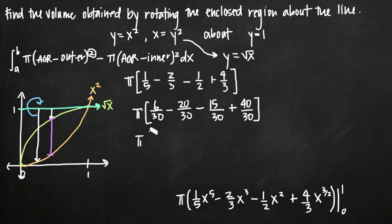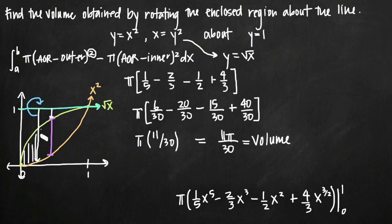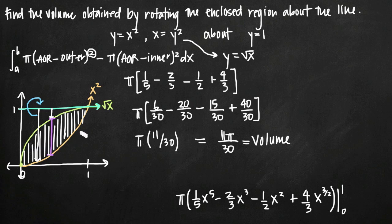Taking 6 minus 20 minus 15 plus 40 gives 11, so we get 11 over 30. Multiplied by pi, our final answer is 11π over 30. This is the volume obtained by rotating the region enclosed by the two curves around the line y equals 1.